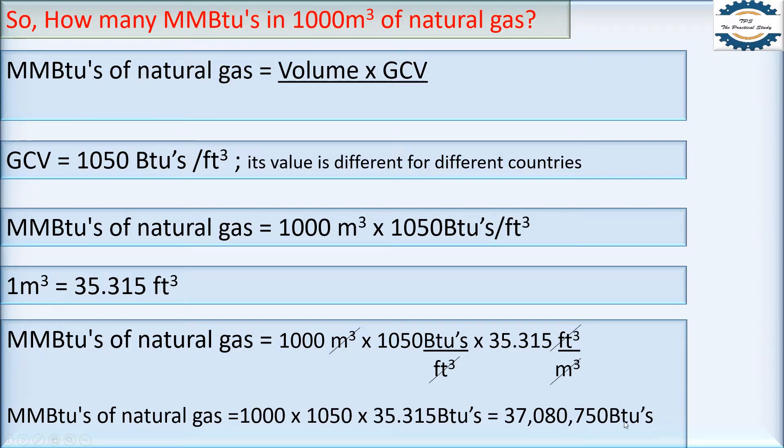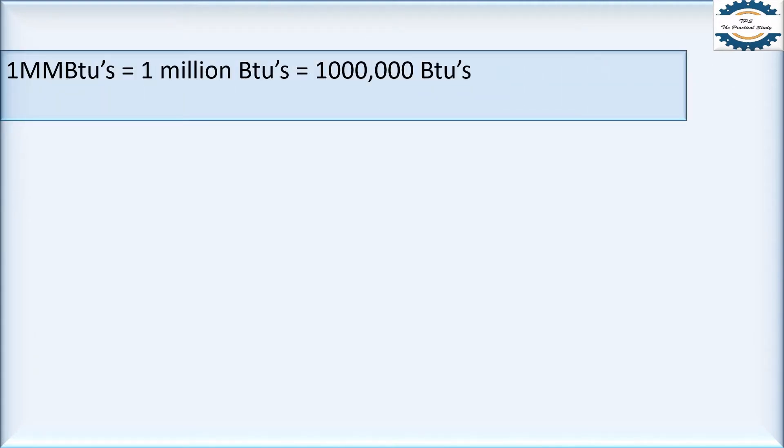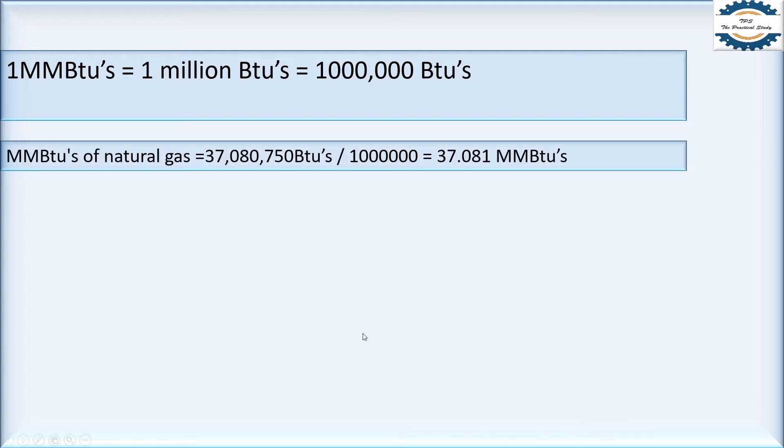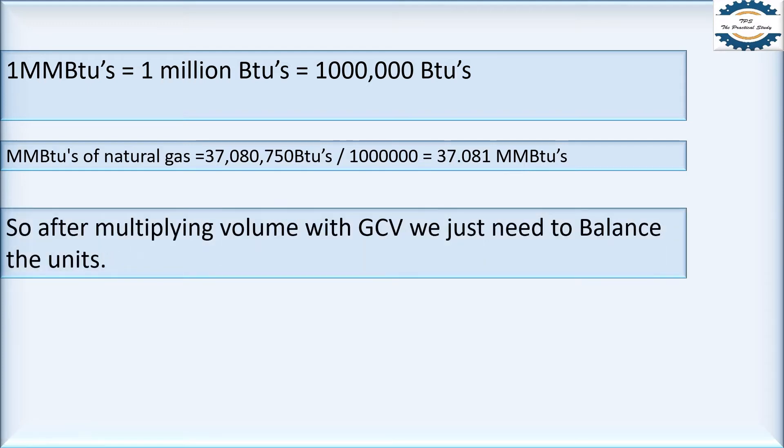And we know 1 MMBTU is equal to 1 million BTU's. So just we need to divide these values of BTU's by 1 million, and then we will get 37.081 MMBtu's. So this is how we can convert volume of gas in any unit in MMBtu's. So just we need to multiply our volume with GCV and then it's all game of balancing our units.